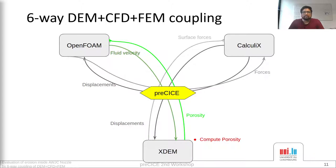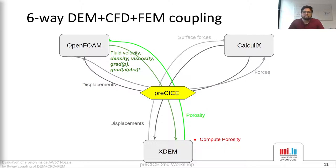As you might have guessed, having hard-coded fluid properties is not really practical. So I have added the fluid property fields required by XTM, such as density and viscosity. In the case of multi-phase flow, we also need the gradient of pressure, and in the future we will also be using the gradient of alpha, which is the interface variable. I have also changed the way XTM computes the drag and buoyancy acting on the particles depending on the type of solver used on the OpenFOAM side — whether single-phase or multi-phase, incompressible or compressible.